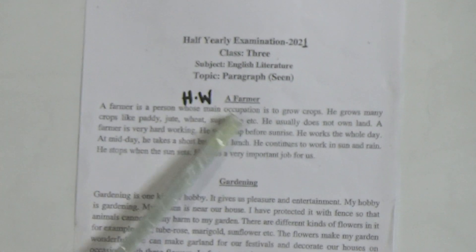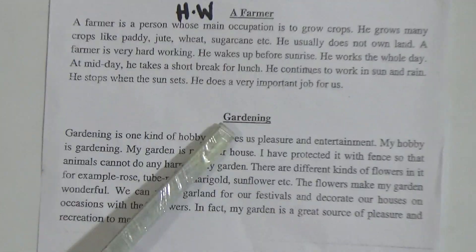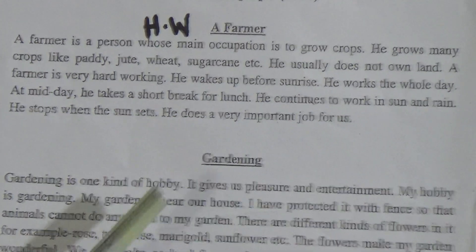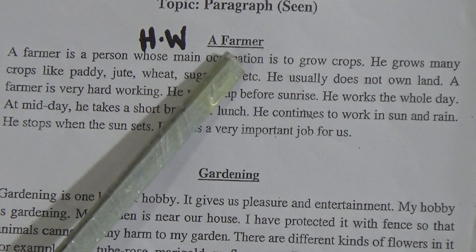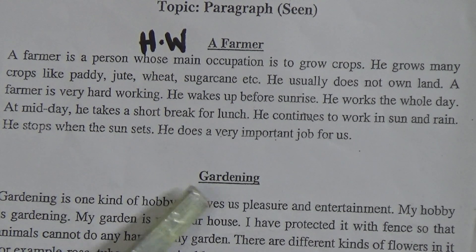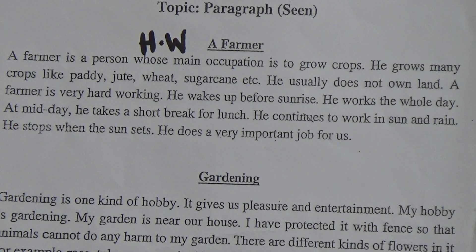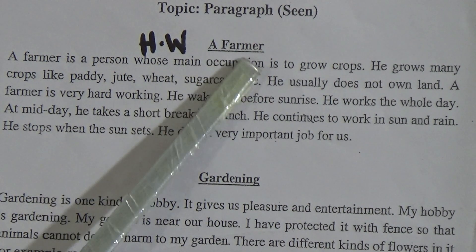I have written here: homework — a farmer, and below one is gardening. So our two paragraphs, first one is a farmer and another one is gardening. Dear learners, let's start with the first one. It is a farmer.